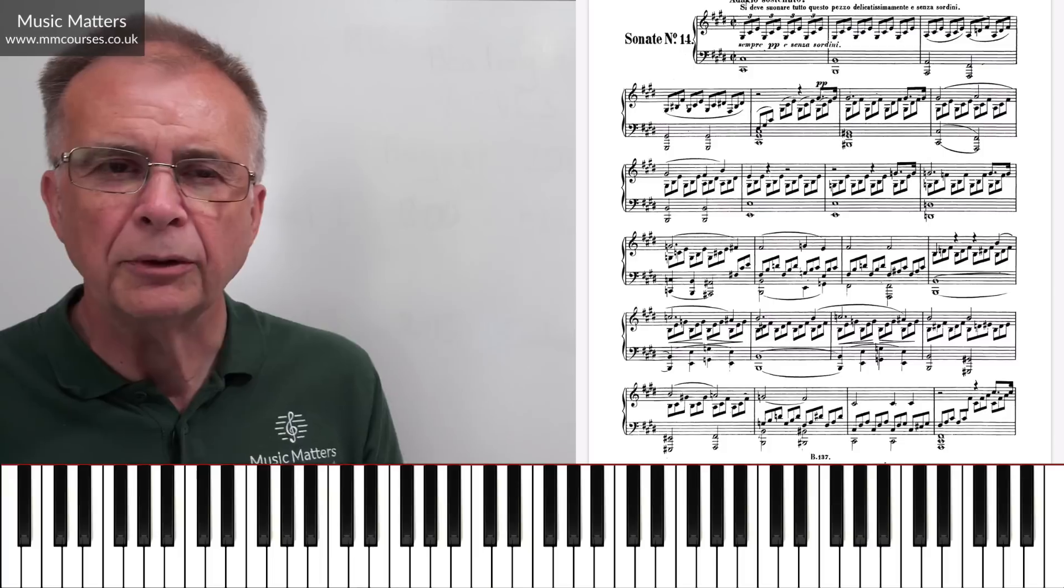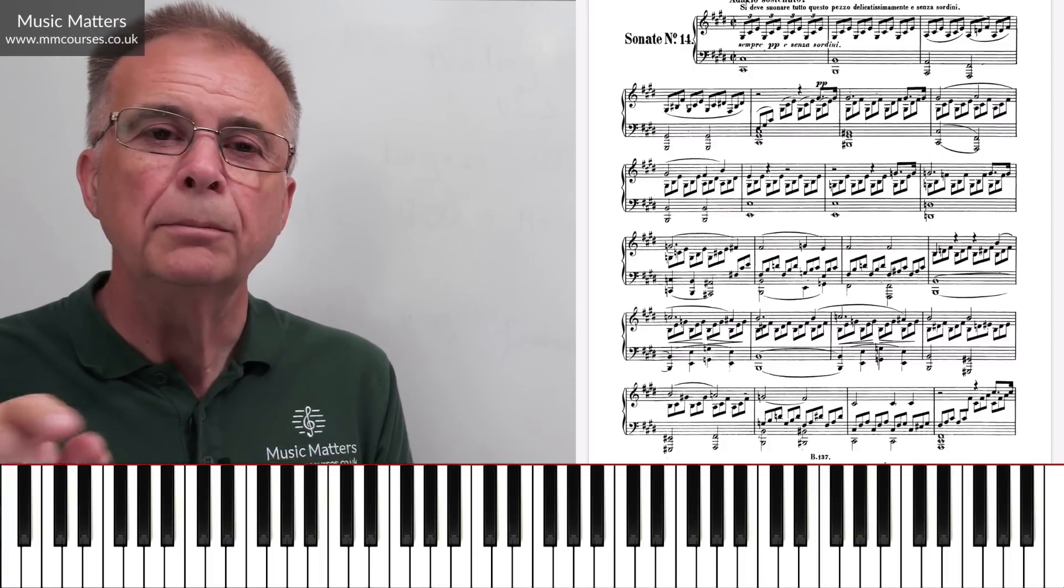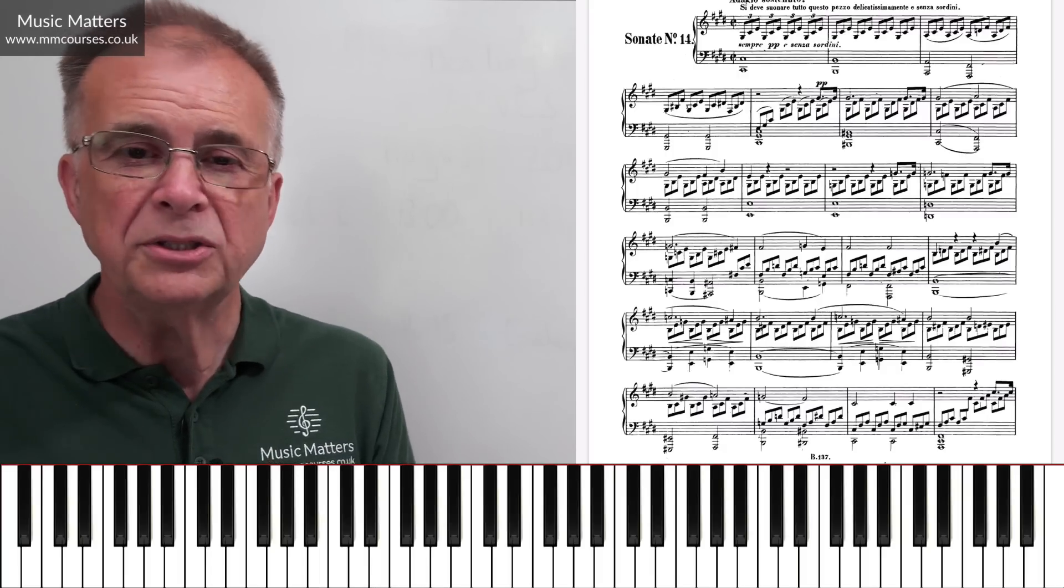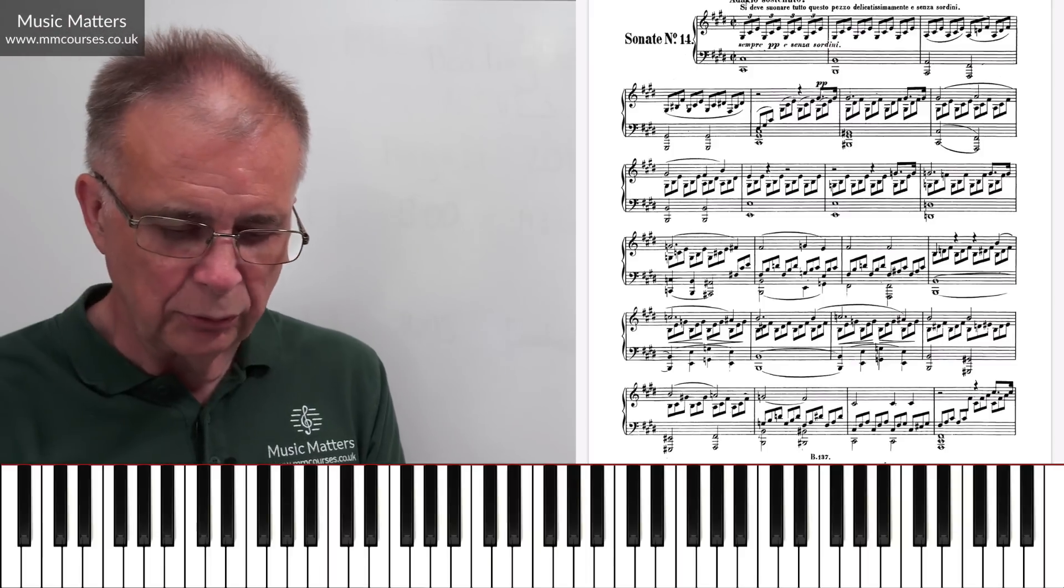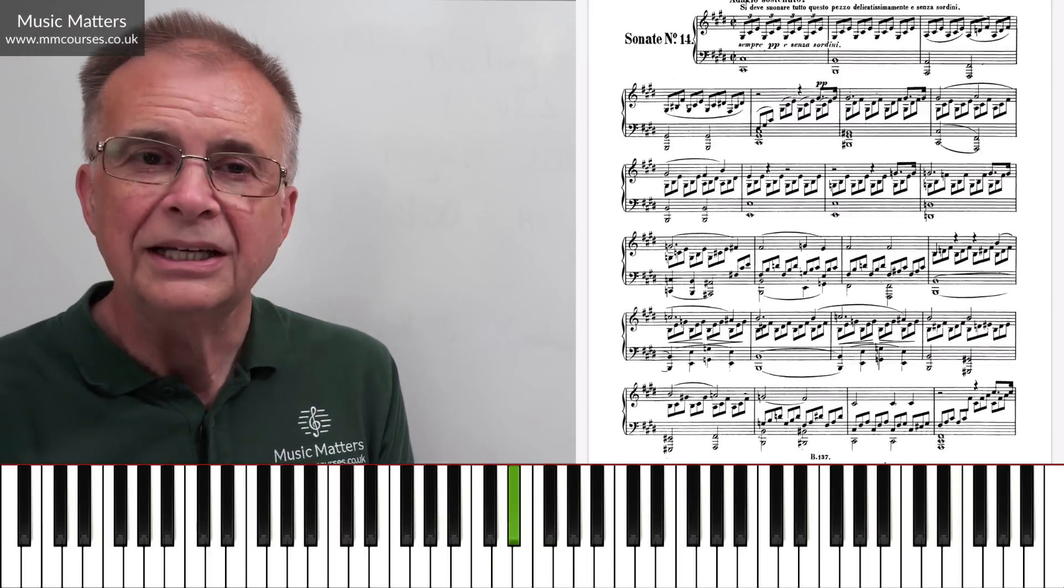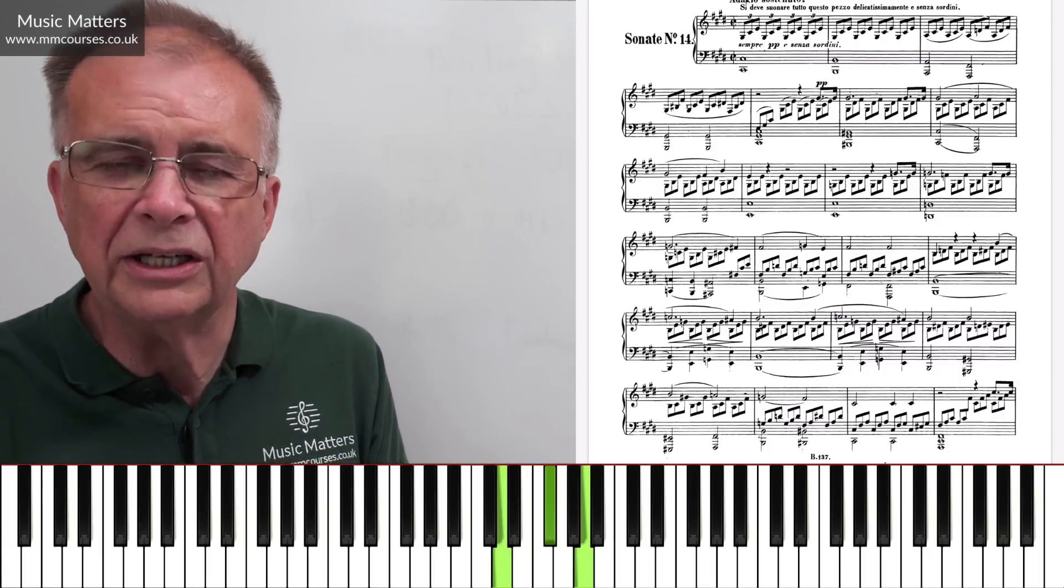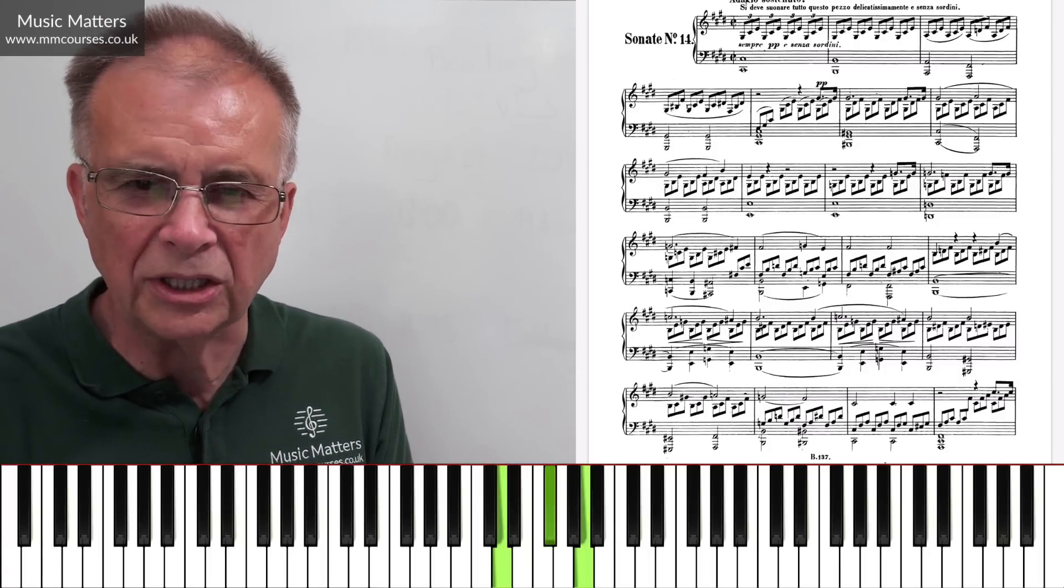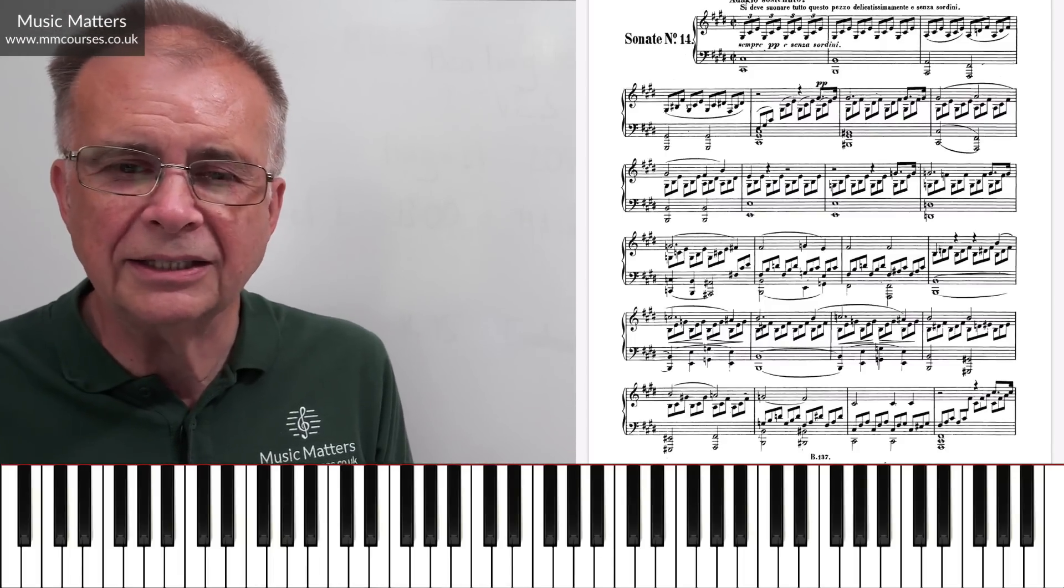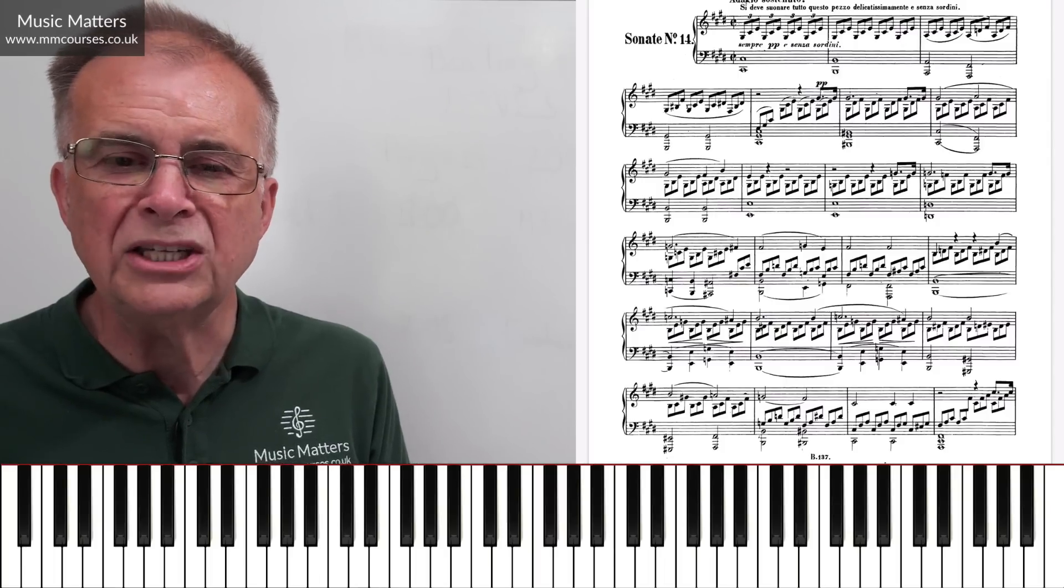Because this is a Neapolitan chord. Okay, now let's think about this for a moment. A Neapolitan chord is a major chord built on the flattened supertonic. So the supertonic, the second degree of the scale. So we're in C-sharp minor, the second degree of the scale is D-sharp. So if we lower that D-sharp to D natural and build a major chord on it, we get a chord of D major. So it's not that he's modulated to D major, nothing like that.